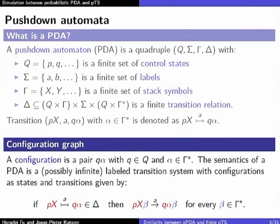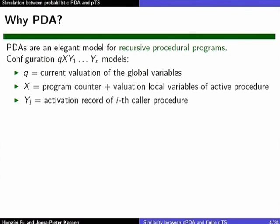The semantics of a pushdown automaton is based on an infinite labeled transition system where the states are the configurations. If you can go from PX to Q alpha in the pushdown automaton, then you can go from the configuration PX-beta, where beta is stack content, by reading symbol A, to Q-alpha-beta.